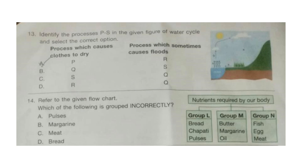Question 14: Refer to the given flow chart. Which of the following is grouped incorrectly? Here, nutrients required by the body are shown: Group L consists of bread, chapati, and pulses; Group M consists of butter, margarine, and oil; Group N consists of fish, egg, and meat. The correct answer is option A: Pulses.